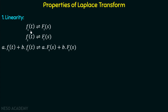Now let's discuss how this property is a combination of homogeneity and superposition. If f1(t) has a Laplace transform F1(s) and we multiply f1(t) by a constant a, then its Laplace transform F1(s) will also be multiplied by the same constant a. Similarly, if we multiply f2(t) by a constant b, then its Laplace transform will also be multiplied by b. This is the homogeneity principle: if we multiply a constant in the time domain, the same constant is multiplied in the Laplace domain.